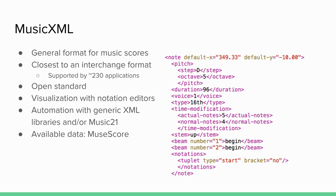Importantly for OMR, there is a huge treasure trove of data in MusicXML format on the MuseScore website. MuseScore is the open-source notation editor, and they have an accompanying repository of user-created scores. Some of these, if licensed appropriately, you can download in MusicXML — something like 100,000 to 300,000 scores, a huge amount.